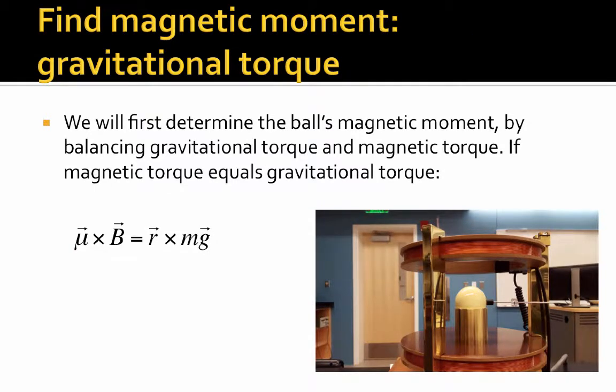First, we'll find the magnetic moment through the use of gravitational torque. We'll determine the ball's magnetic moment by balancing the gravitational torque and magnetic torque. The experiment will look something like this, where the magnetic torque exerted on this ball is balanced by the gravitational torque exerted on this rod.